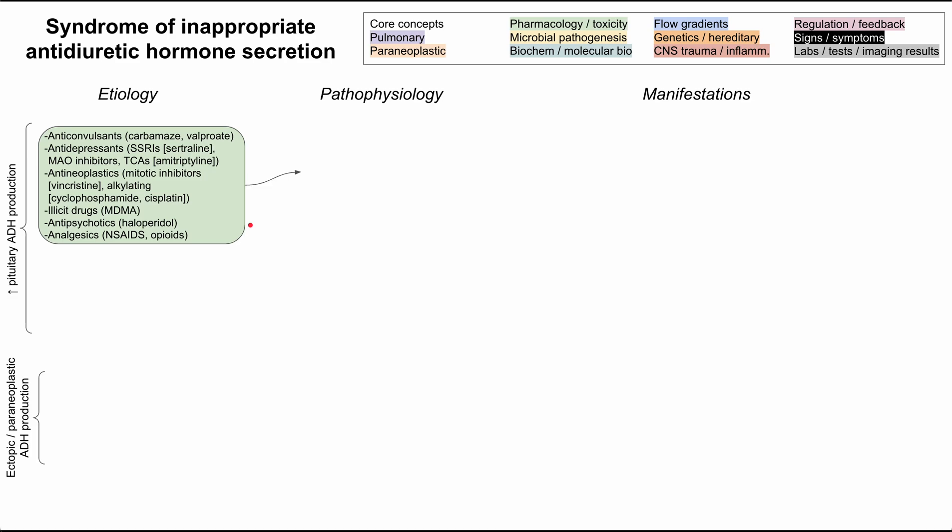A number of anti-cancer drugs can also cause SIADH. This includes vincristine, which is a mitotic inhibitor, and cyclophosphamide and cisplatin, which are alkylating agents. Some illicit drugs like MDMA, some antipsychotics like haloperidol, and some analgesics like NSAIDs and opioids can also cause SIADH.